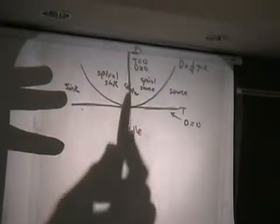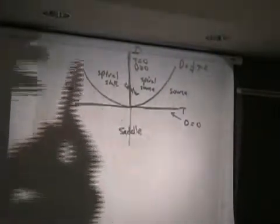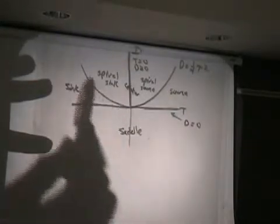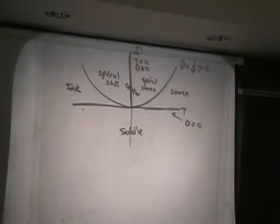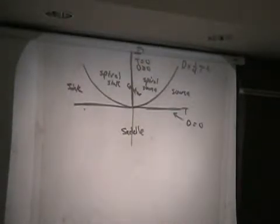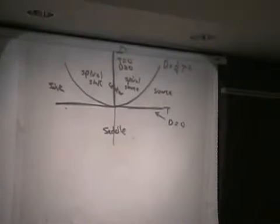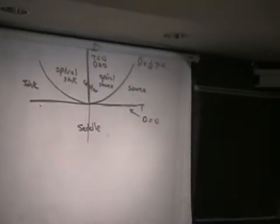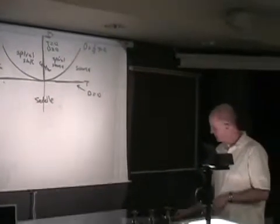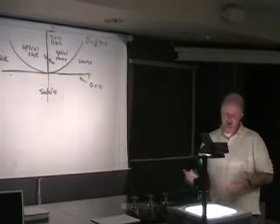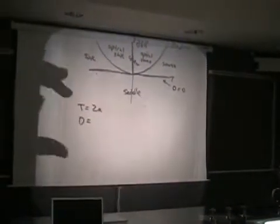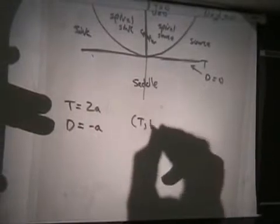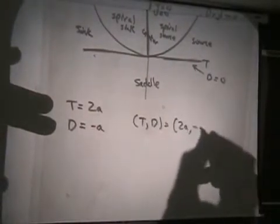Also where you have a, well, not so strange when the real part is zero, that's going to be a center. But strange things can happen along the repeated root parabola and along the T axis. It's the topic of section 3.5 which you should read about. So how does this apply? How do we use this trace determinant plane? Coming back to the example I just showed you, the trace was 2a and the determinant was negative a.